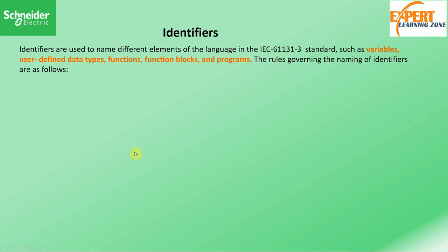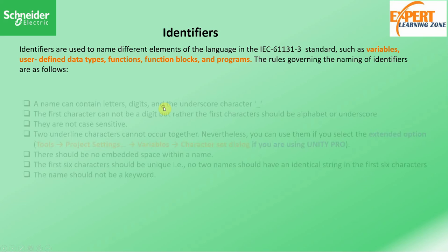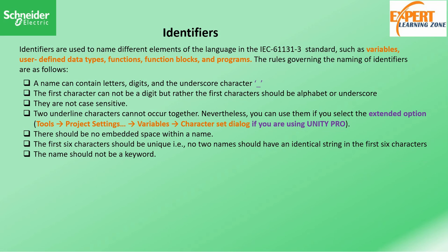Looking at the bigger picture, identifiers are used to name different elements in the IEC 61131-3 languages. These identifiers include variables, user-defined data types, functions, function blocks, and programs — all of which we are going to explore during our programming sessions.